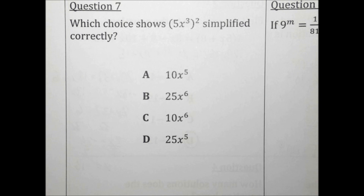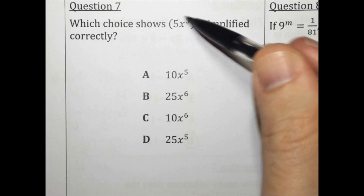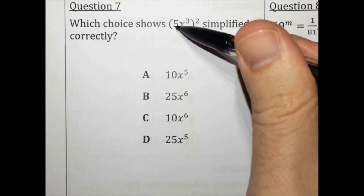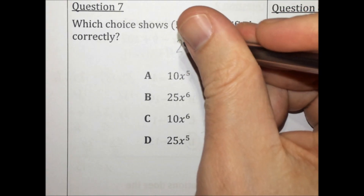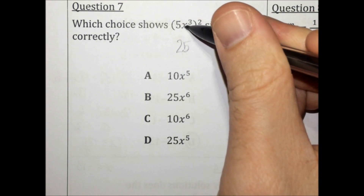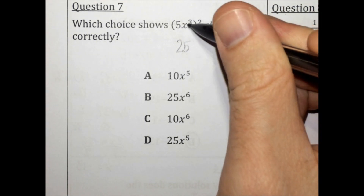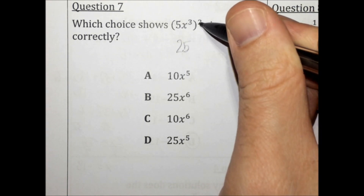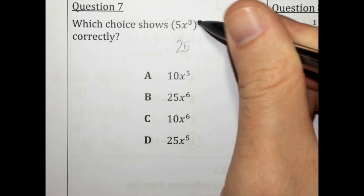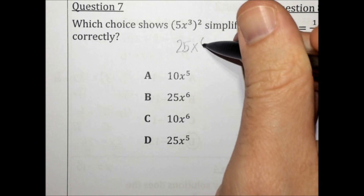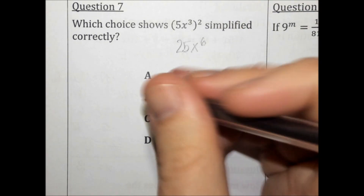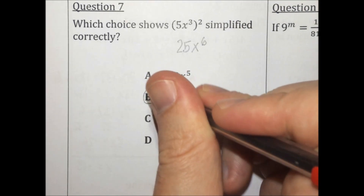Which choice shows (5x to the third) squared, simplified correctly? We need to square everything in the parentheses. 5 squared is 25. When you have a power to a power, like x to the third, squared, you multiply those exponents. So 3 times 2 is 6. The answer is 25x to the sixth. That's choice B.